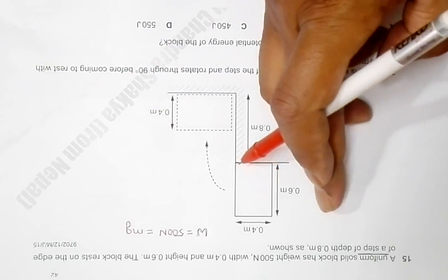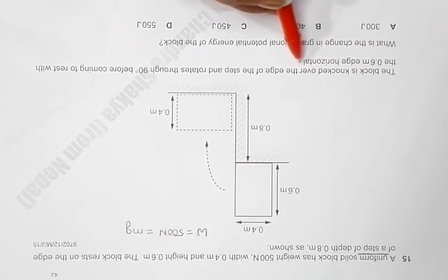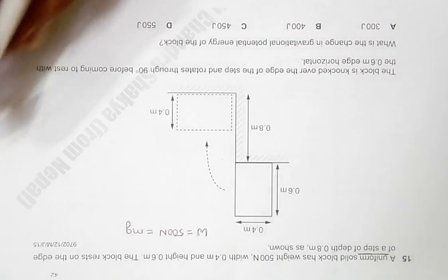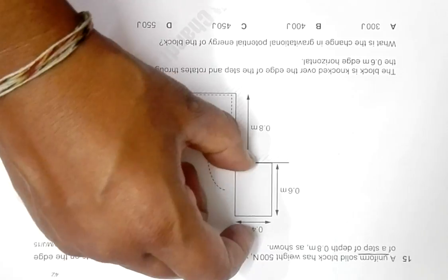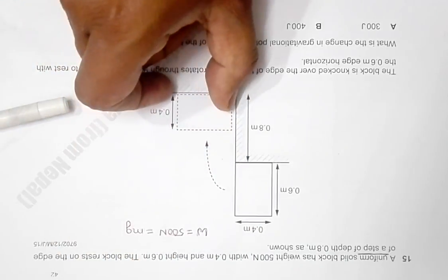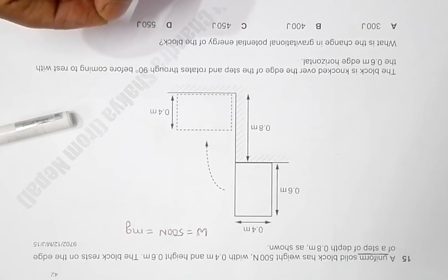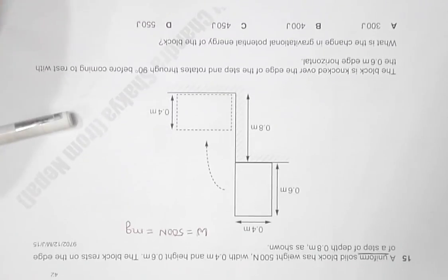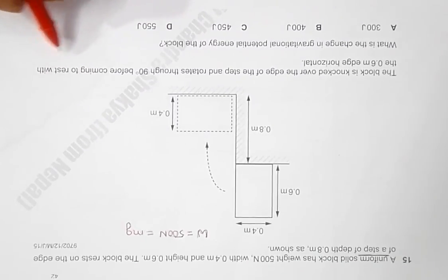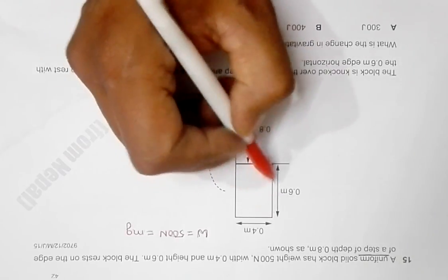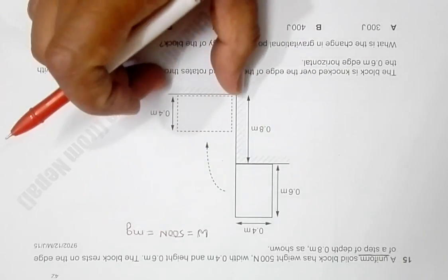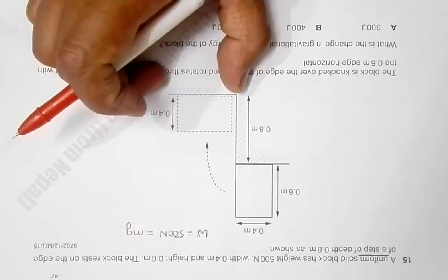The block is tipped over the edge of the step and it rotates through 90 degrees. So initially it was like this, then it becomes somewhat like this. It rotates through 90 degrees before coming to rest with the 0.6 meter side now becoming horizontal.